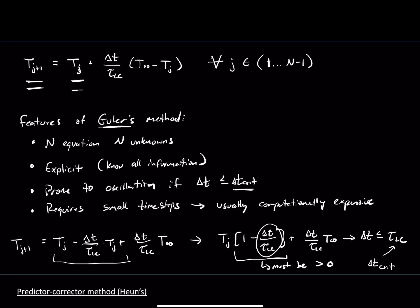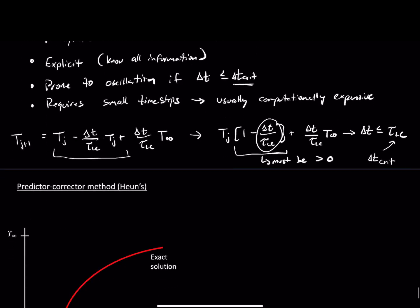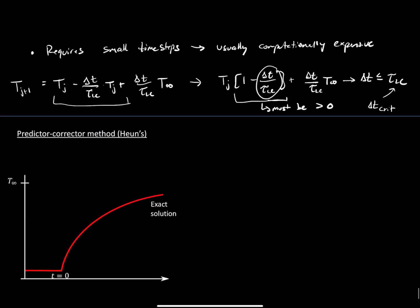Let's talk about another method — a different flavor that requires different things. The next one we're going to talk about is called a predictor-corrector method. One technique here is called Heun's method.